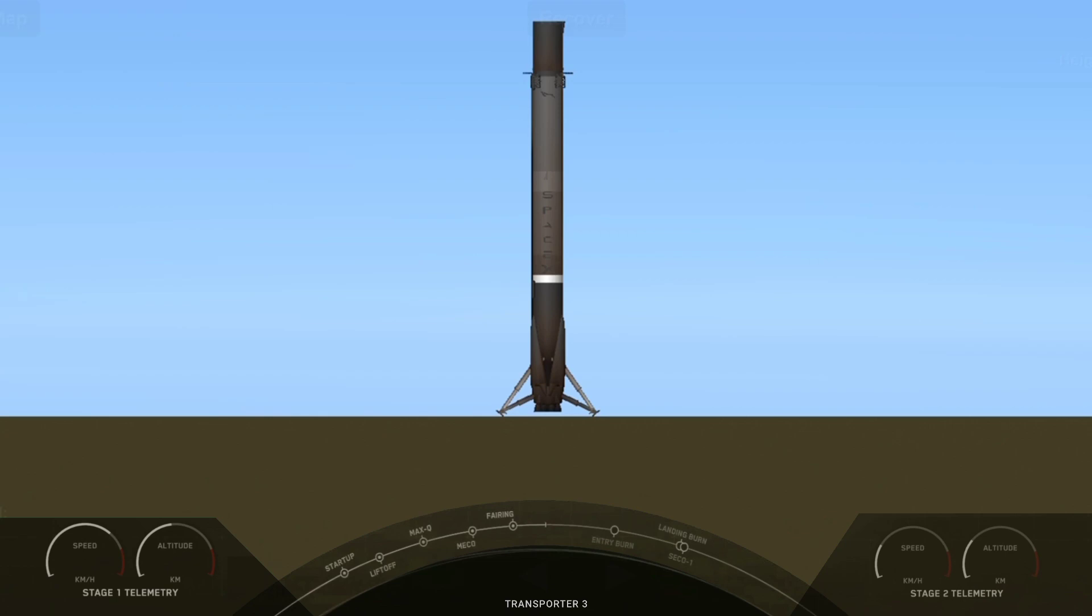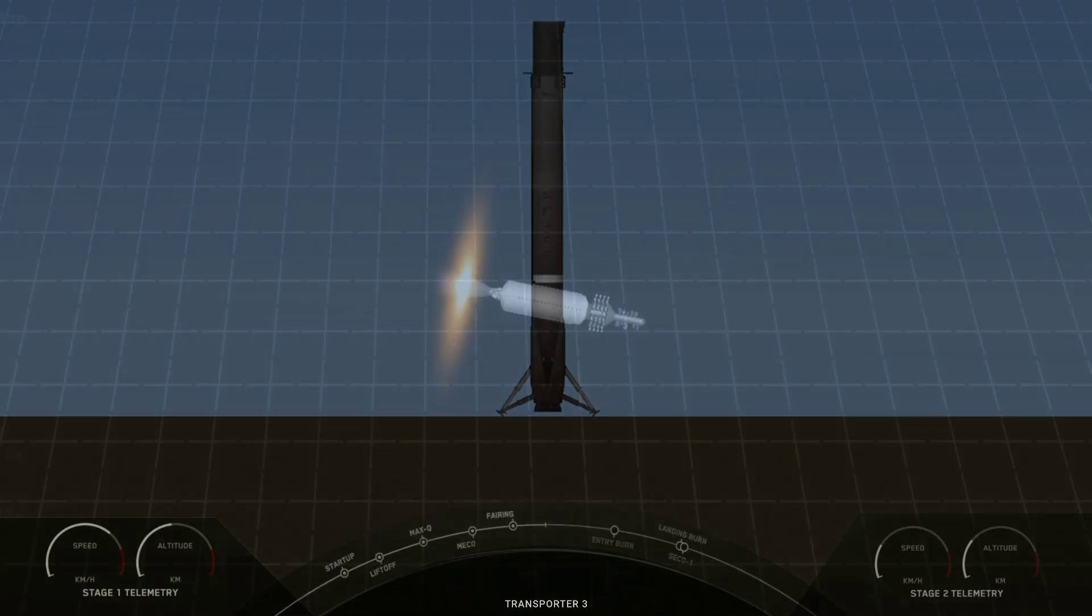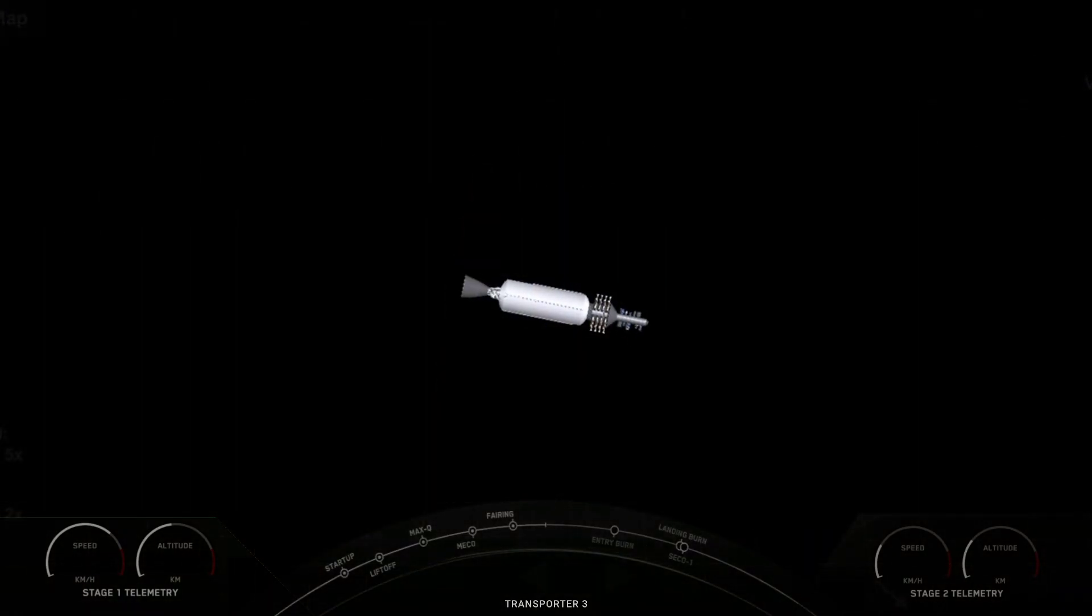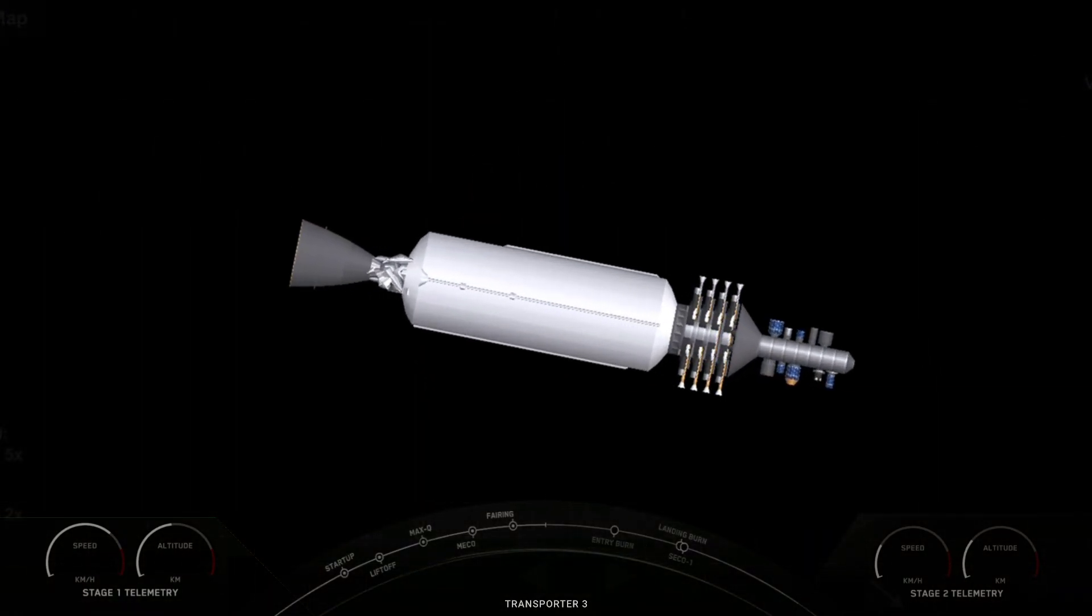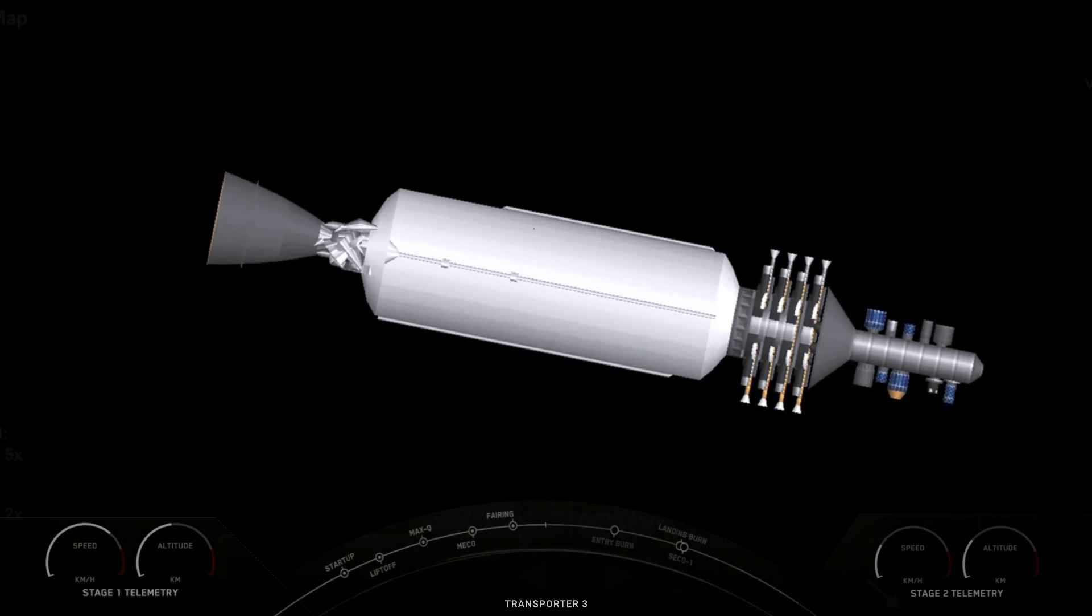Nominal parking orbit. All right, so we just heard their second stage had a good orbit, so we cut off, or shut down, the Mvac engine on the second stage, and as we just heard, we had a good orbit. So we're now going to coast for the next 45 minutes or so while we wait for second engine start two, or SES 2. We'll see you back here at around T plus 55 minutes.